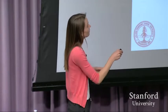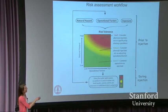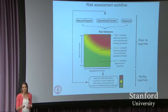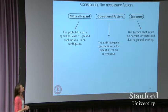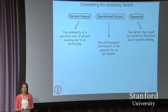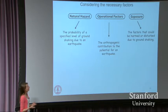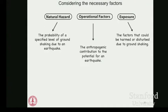Here is our risk assessment workflow. I don't want you to try to digest it all at once — I'll go through each section explicitly so we can work through it together. To begin, I want to focus on the top part: the natural hazard, operational factors, exposure, and what we call the risk tolerance. The necessary factors that need to be considered are the natural hazard — the probability of shaking in a particular area — the exposure such as population and population density, as well as the unique problem here: the operational factors, which are the anthropogenic contribution.